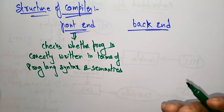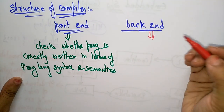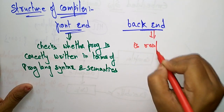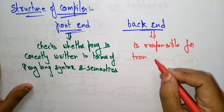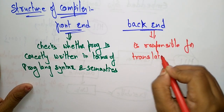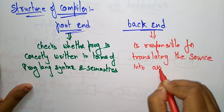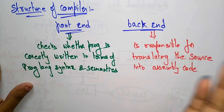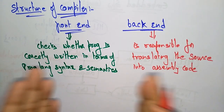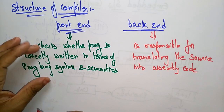The front end concentrates on whether the program is correctly written in high level language syntax and semantics. The back end is the main responsible part. The back end is responsible for translating the source code into assembly code. The compiler is a software program used to convert one language into another language, and the front end checks whether the program is written in terms of programming language syntax and semantics.